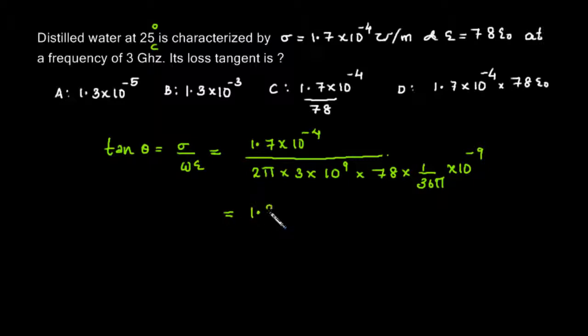So we can solve this using our calculator and its value will be 1.3 into 10 power minus 5. So the correct option is option A.